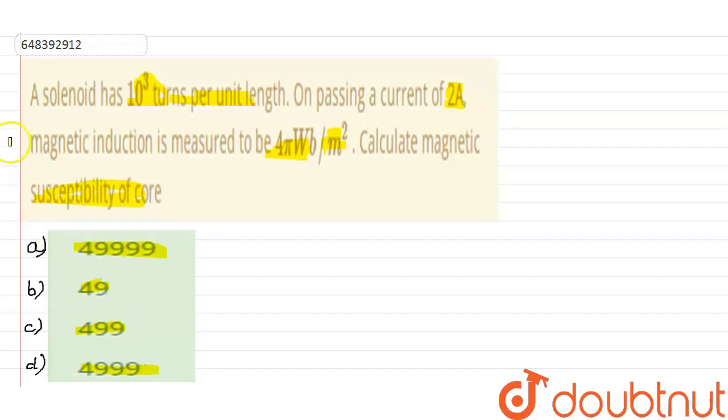And the options are 49999, 49, 499, 4999. So first of all what we need to do, we know that the formula is B equals μ₀Ni. This is the formula for the solenoid.